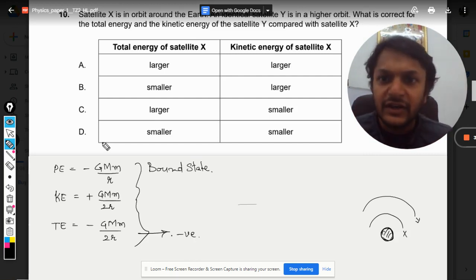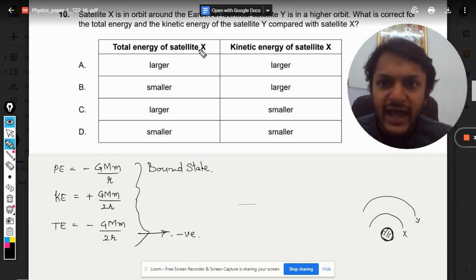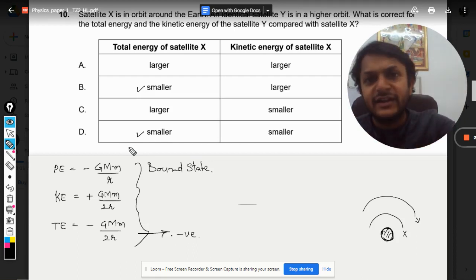So for Y, the total energy will be more, and for X, the total energy will be lesser. So total energy for X will be smaller. That is done. Now we know this, and also the total energy is always negative for a satellite.